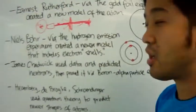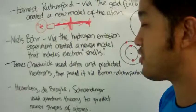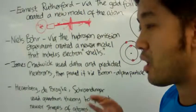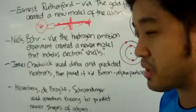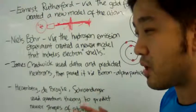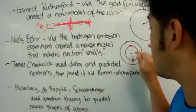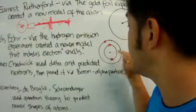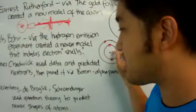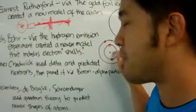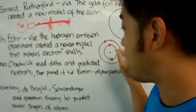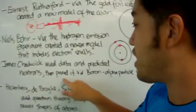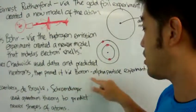So there came along another gentleman by the name of Chadwick, and he used data to predict neutrons. He said that according to all the experiments that were done, the mass of the atoms does not correspond to the number of protons that exist. So there must be another subatomic particle there that has no electrical charge.